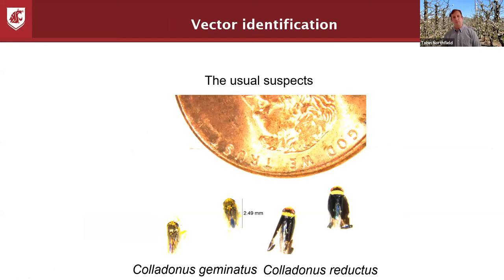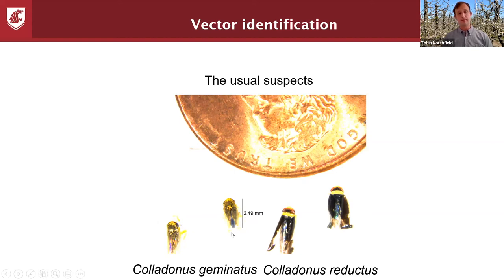These are pictures of the prime suspects for X disease phytoplasma in Washington and Oregon. Cholodonus geminatus was studied by Mervyn Nielsen in the 1950s and Homer Wolf in Wenatchee. Cholodonus reductus is shown here next to a penny for scale — they're roughly about two and a half millimeters long.